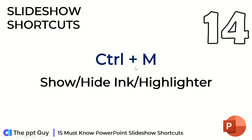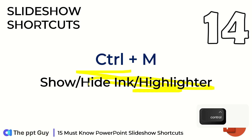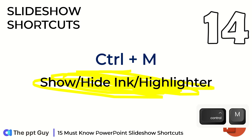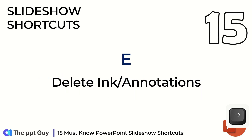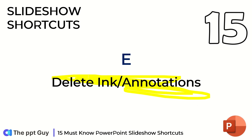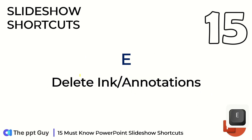To understand shortcut number 14, we need a highlighter. Let us highlight something. Then we can show or hide it — just press Ctrl M to hide the pen markings or highlighted text or objects on a slideshow. We need a highlighter again to understand the last shortcut. If you want to delete a previous highlight, just press E, which will erase or delete the previous highlight.